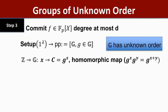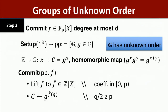We use a key object called a group of unknown order. This gives us the ability to commit to integers with a succinct commitment — just one group element — that is also homomorphic. If I have commitment G^X for integer X, then G^X · G^Y = G^(X+Y). So we commit to the integer encoding F̂(Q), and this inherits the same homomorphic property: given commitments to F̂(Q) and Ĝ(Q), we can multiply them to get a commitment to (F̂+Ĝ)(Q).